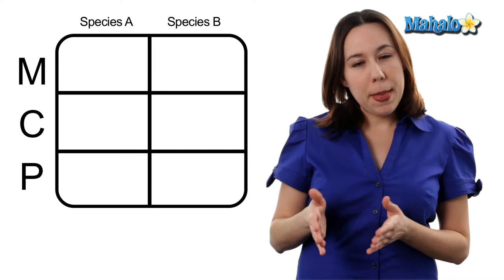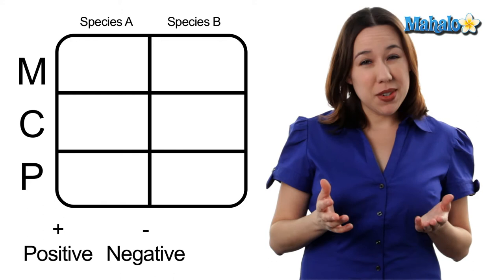If the interaction is positive for that species, you're going to put a plus. If it's negative, you're going to put a minus. If it's neutral, you're going to put a zero.